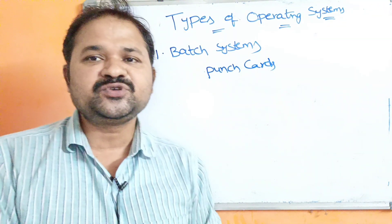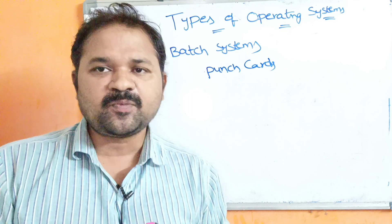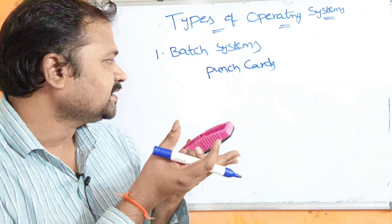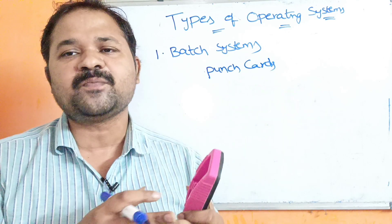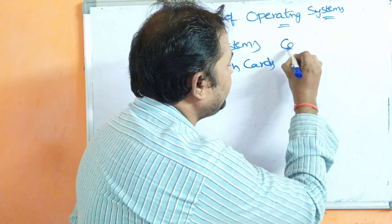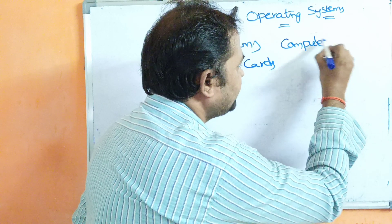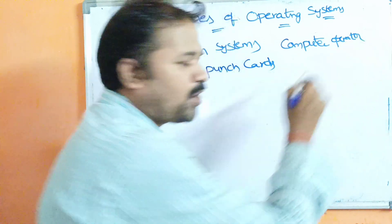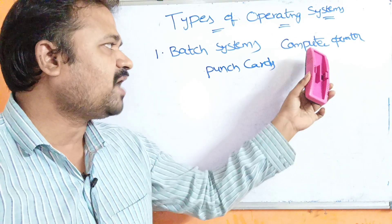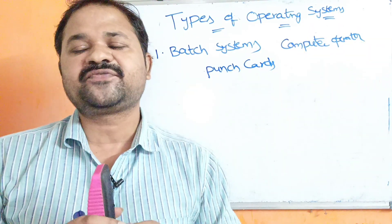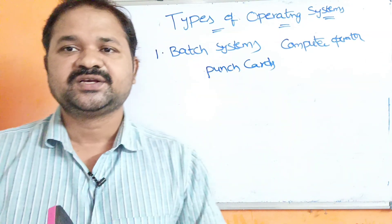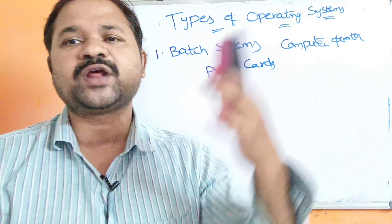The user provides the program or job information in the form of a punch card. After writing the corresponding program or job details in the punch card, all the jobs will be submitted to the computer operator. The problem with this approach is that the user cannot interact with the computer directly — in between the user and computer, there is a computer operator.